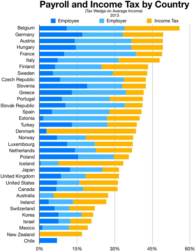Nearly all systems permit residents a credit for income taxes paid to other jurisdictions of the same sort. Thus, a credit is allowed at the national level for income taxes paid to other countries. Many income tax systems permit other credits of various sorts, and such credits are often unique to the jurisdiction.